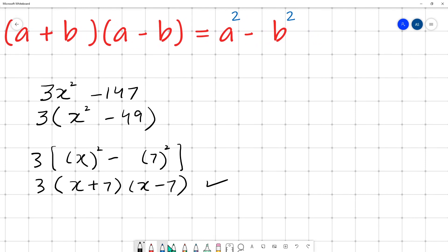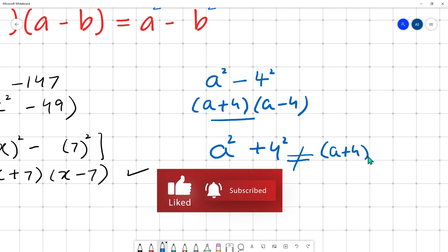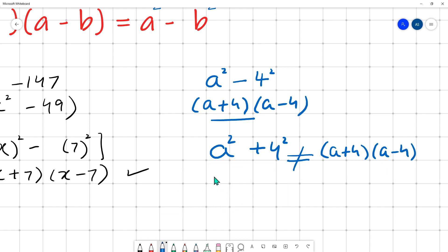But you have to keep one thing in mind. For example, if you have a square minus b square, let's say a square minus 4 square, we can write it as a plus b, a minus b. We know that for sure. But if it is a square plus b square, if it is a square plus 4 square, this is not equal to a plus 4 and a minus 4, because we don't have an identity for a square plus b square. We have it for a square minus b square. We have to keep this in mind. This is a very common error.